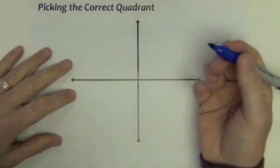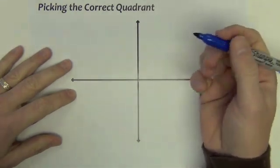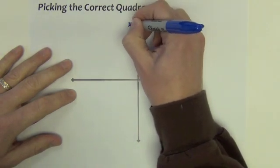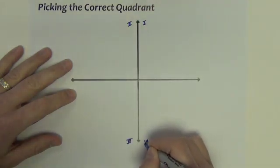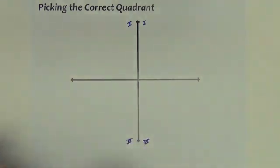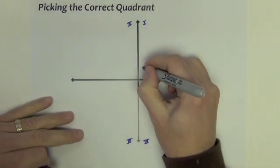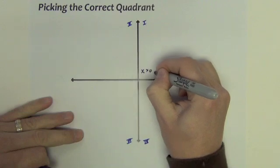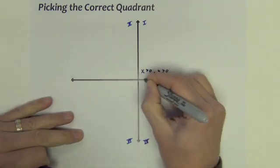Let's write a little bit of stuff and label the quadrants first, just so we've all got that correct: Quadrant 1, 2, 3, and 4. In quadrant 1, x is greater than zero and y is greater than zero — in other words, positive, positive.